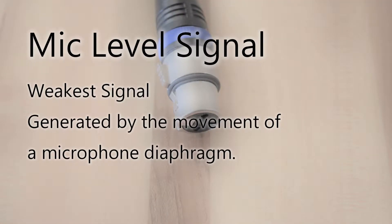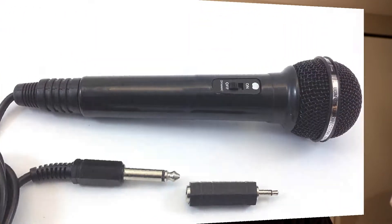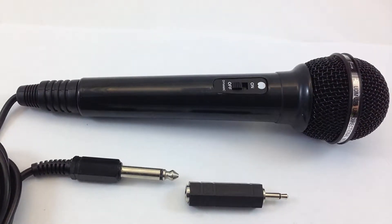Next, let's talk about different signal levels, starting with the very weakest — mic level. Mic level signals are just a tiny signal made by the movement of a microphone diaphragm, so they're extremely weak and need a lot of amplification. That's why mic level signals should always be on a balanced connection, because you're going to have to amplify it and you need a quiet connection that doesn't pick up anything.